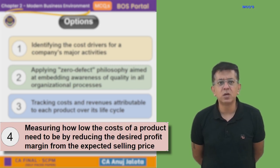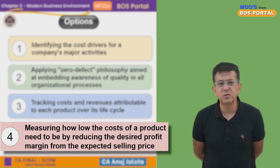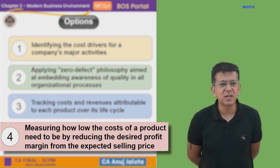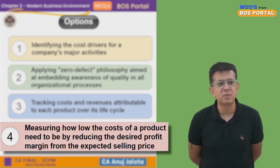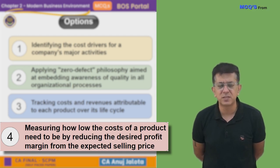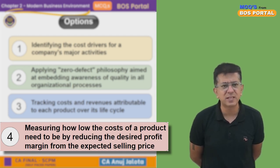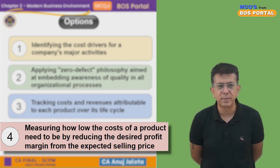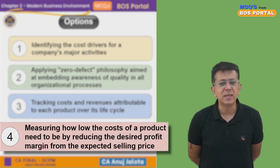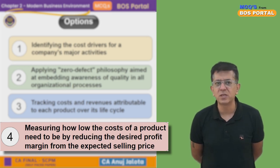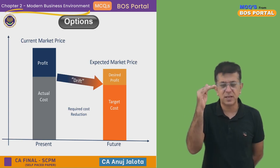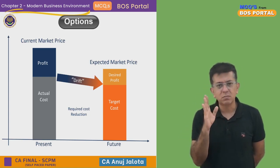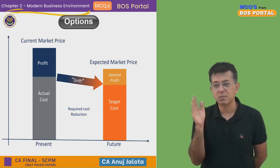For option four — measuring how low the cost of a product needs to be by reducing the desired profit margin from the expected selling price — they are not talking of total quality management here. I think they are talking about something called Target Costing. Target costing is where we have a certain selling price, but the market is expecting some other price; that is called the target price.